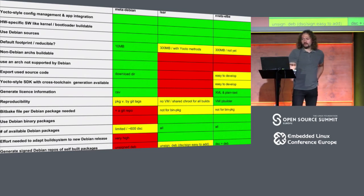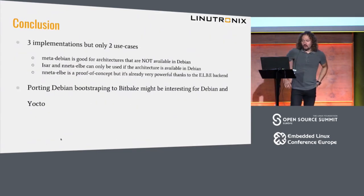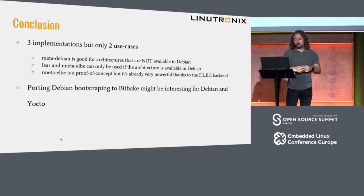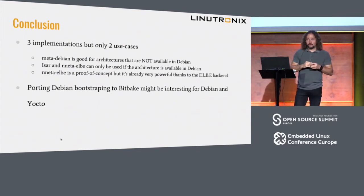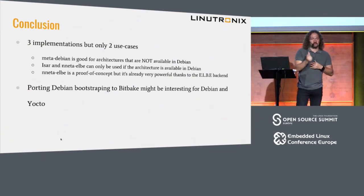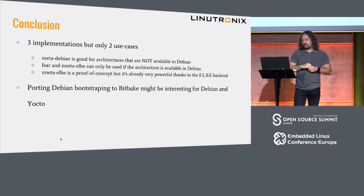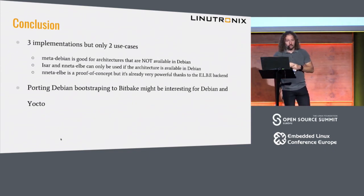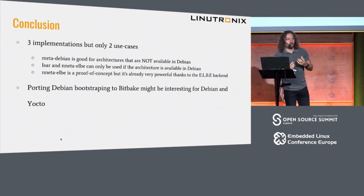So you see there are basically three solutions out there but with two main use cases. MetaDebian is good for architectures that are not available in Debian. ISAR and Neta-ELBE can only be used with architectures available in Debian. So if you need a special architecture or special profile flags, MetaDebian is really interesting. Neta-ELBE is in a proof-of-concept state but already very powerful because it uses the established ELBE as a backend.